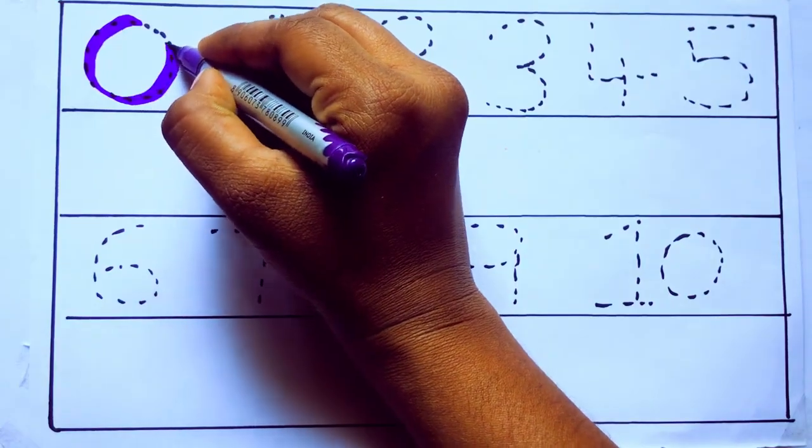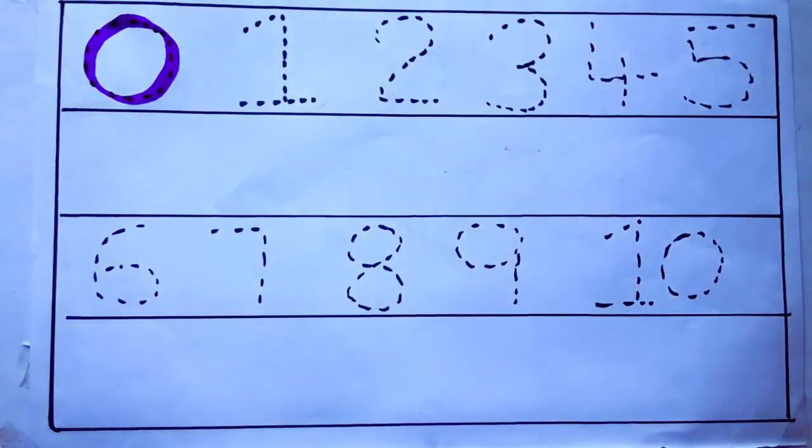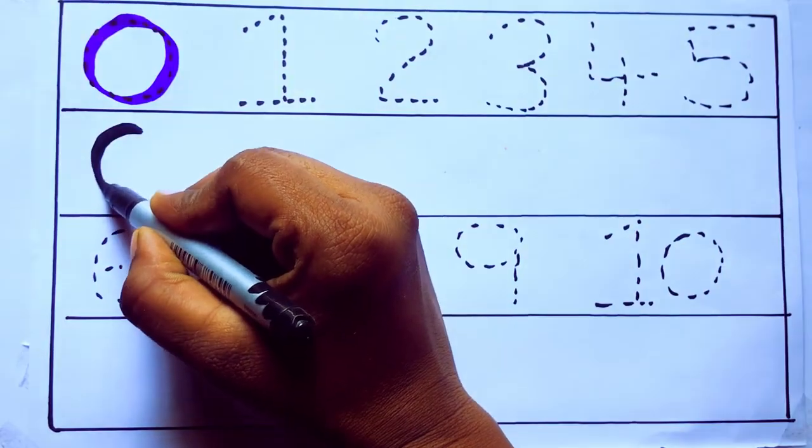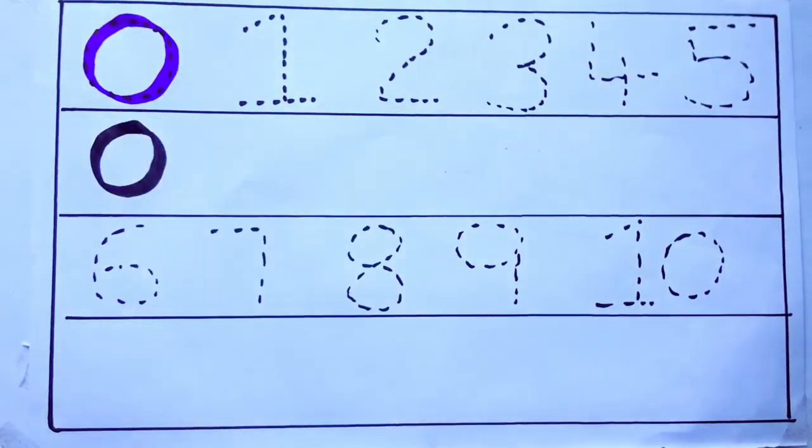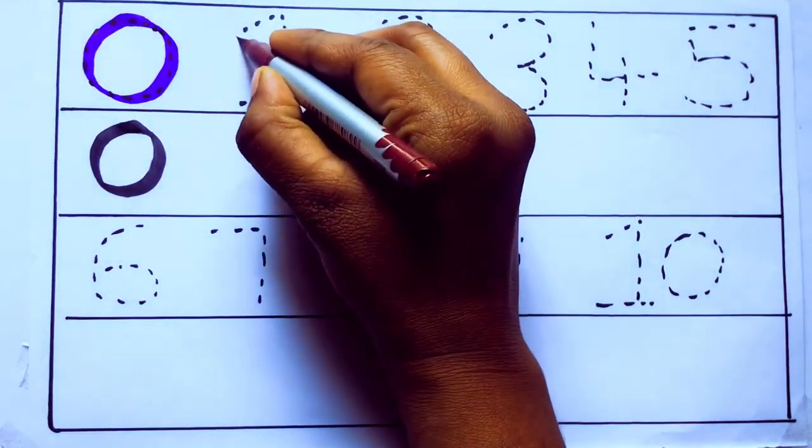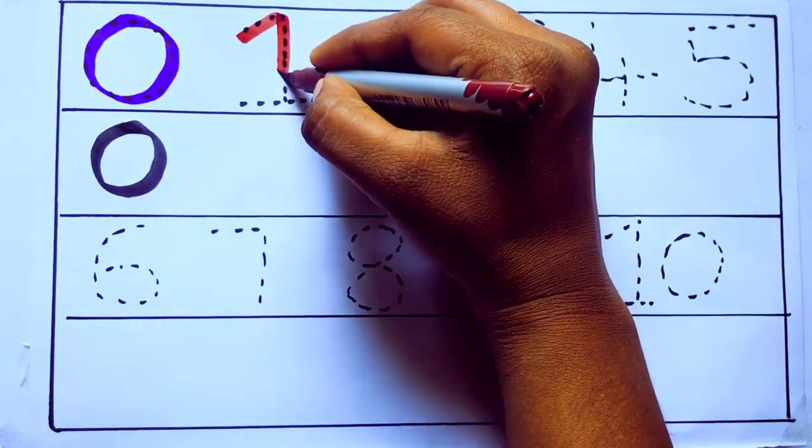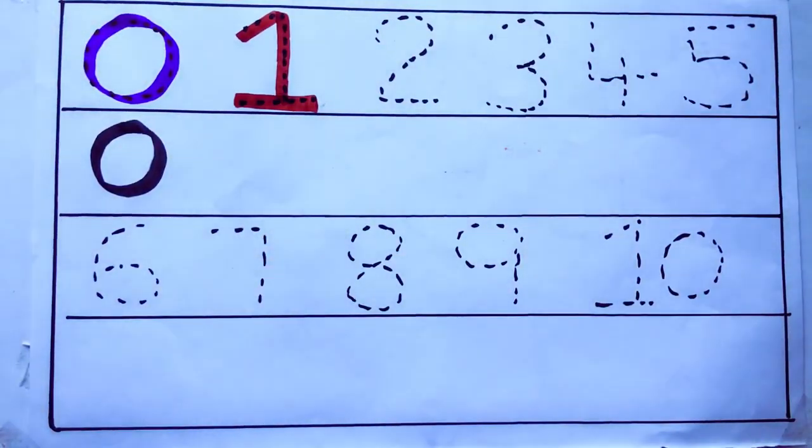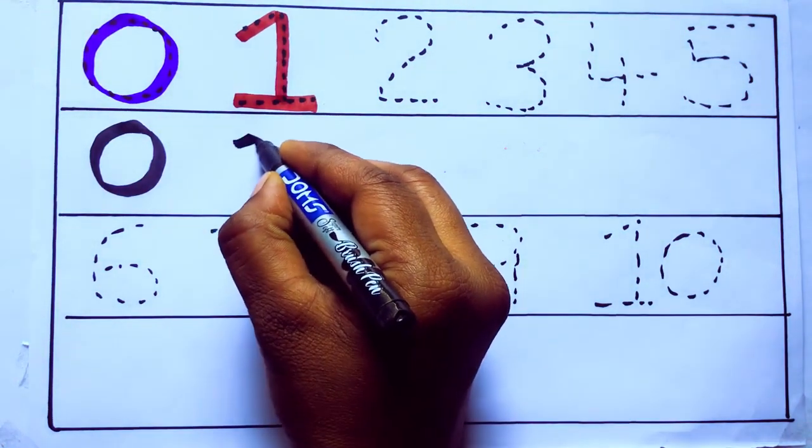Violet color, zero. Z-E-R-O. Zero. Brown color, one. O-N-E. One. Number one.